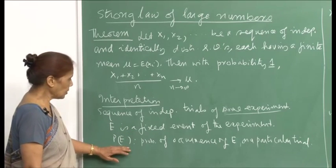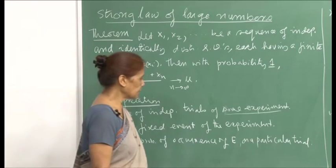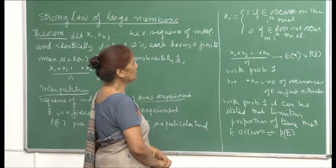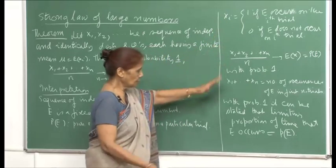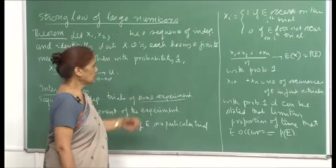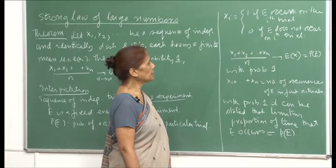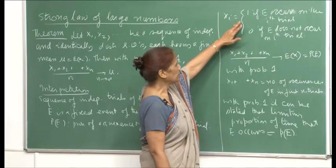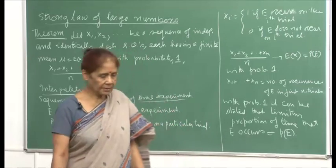Define x_i = 1 if E occurs on the i-th trial, and x_i = 0 if E does not occur on the i-th trial. I am defining an indicator variable just to show how we can interpret the strong law of large numbers. So x_i takes the value 1 if E occurs on the i-th trial, and 0 otherwise.